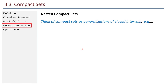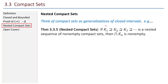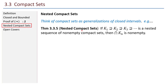Nested compact sets: we can think of compact sets as generalizations of closed intervals. This theorem shows that nested compact sets behave like nested closed intervals. Recall the nested interval property: if I have nested closed intervals, their intersection is non-empty. The same holds for compact sets: if K1 ⊇ K2 ⊇ K3 ⊇ K4 ⊇ ... forever, then the intersection of all those compact sets is non-empty.